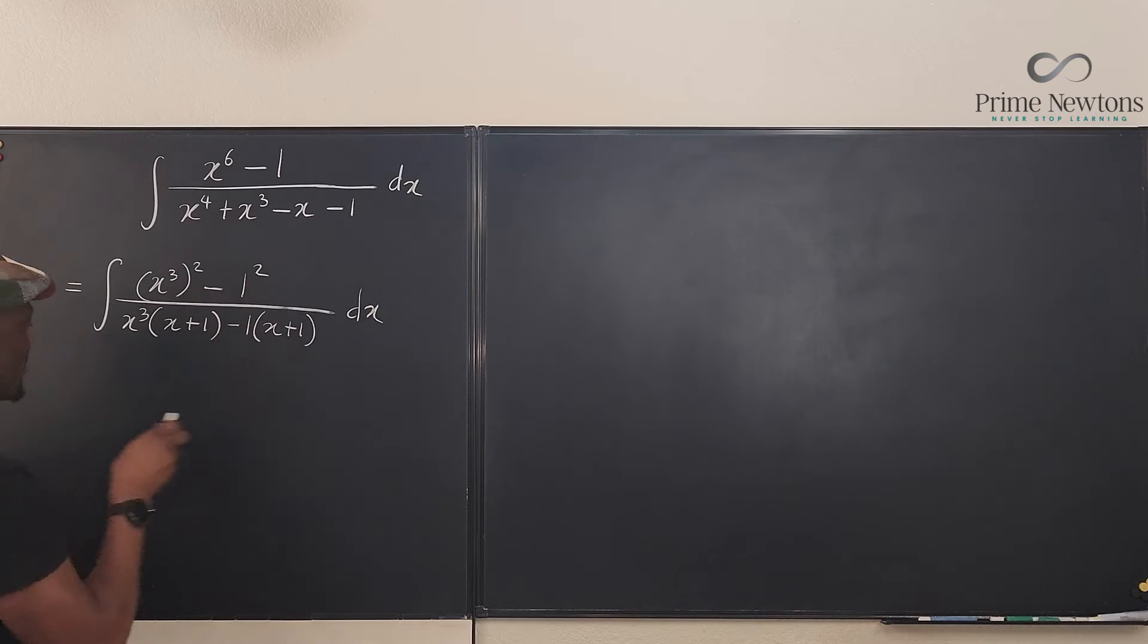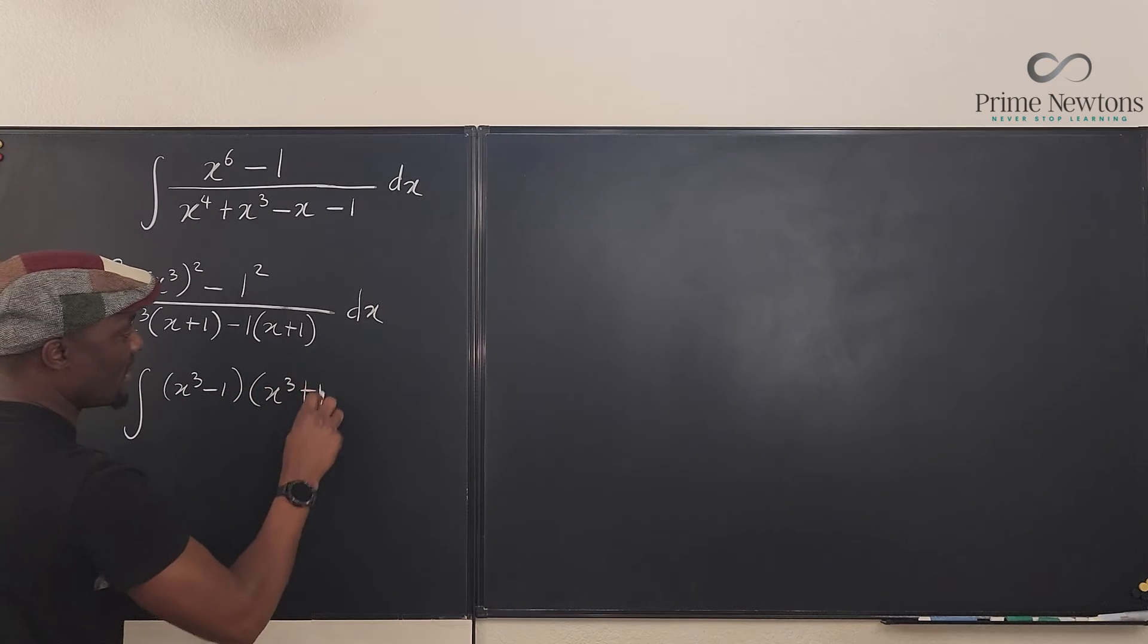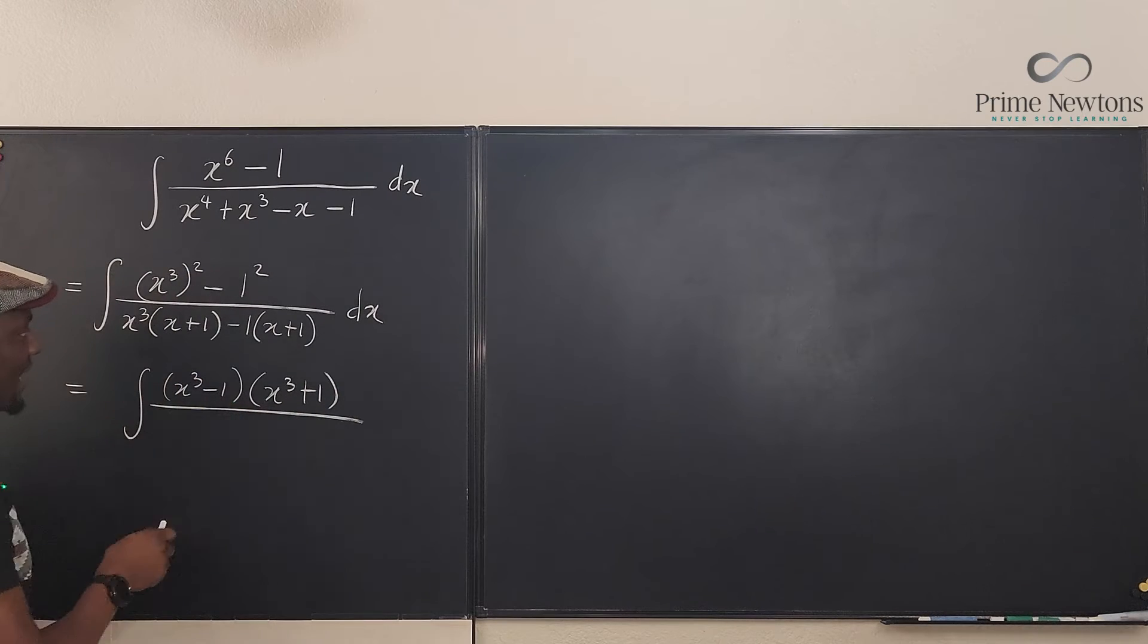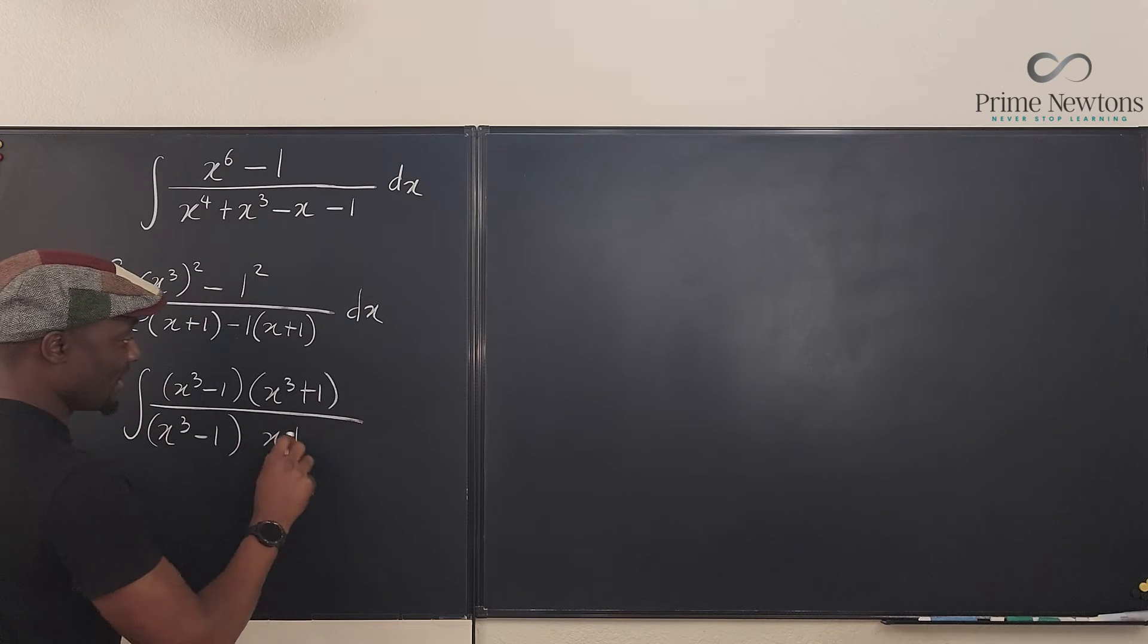Because this is difference of two squares, I can write this as the integral of x cubed minus one times x cubed plus one. And here I can write this as x cubed minus one times x plus one.